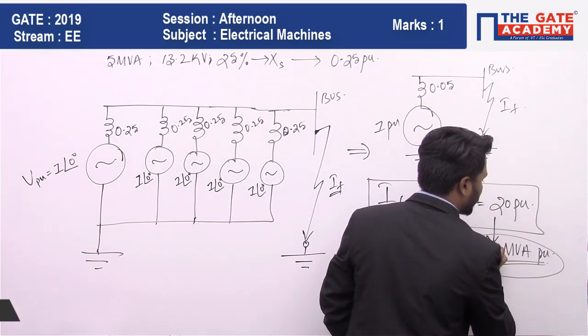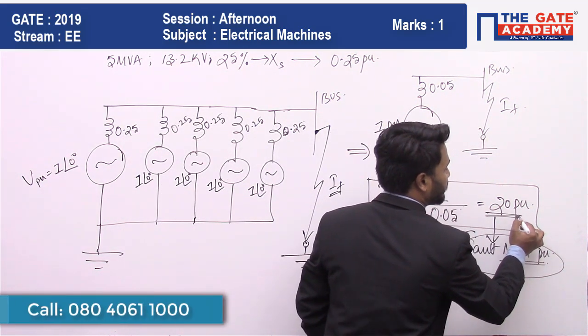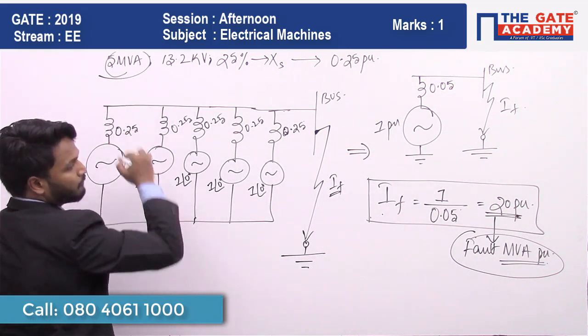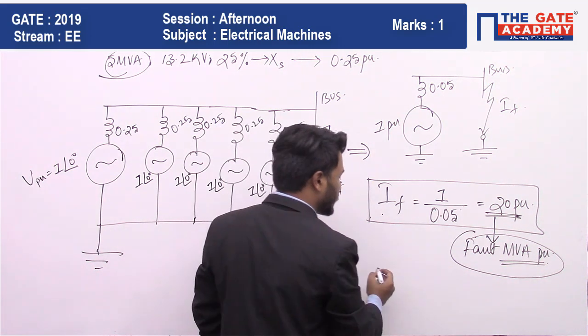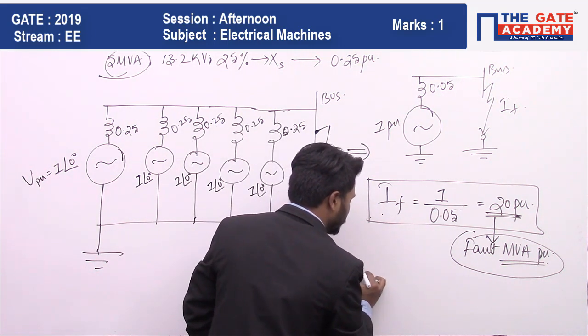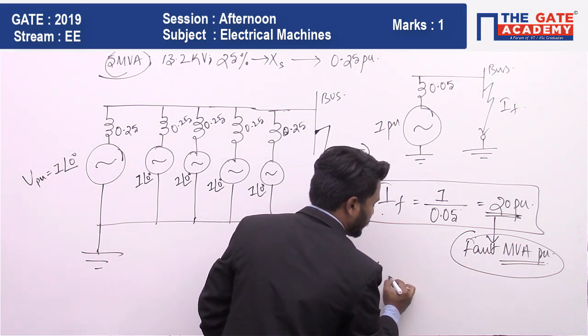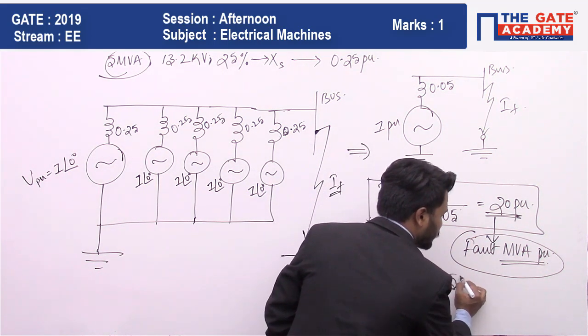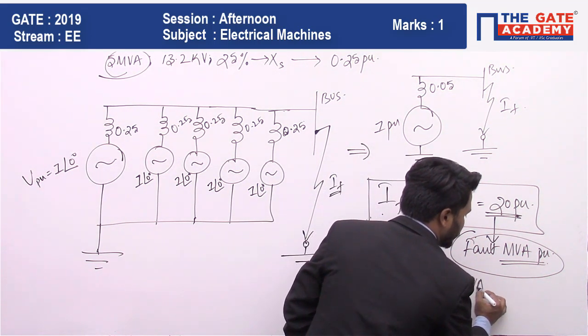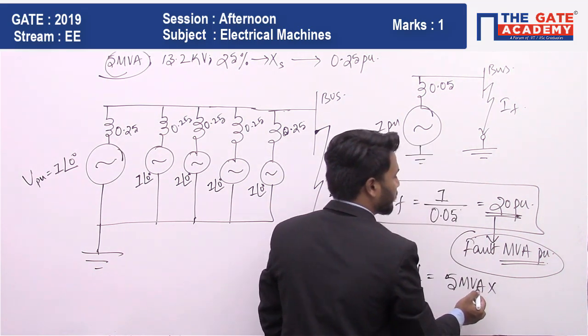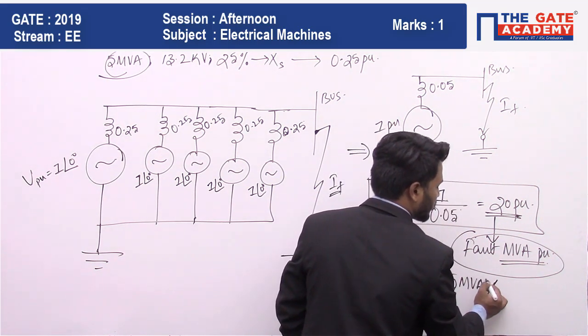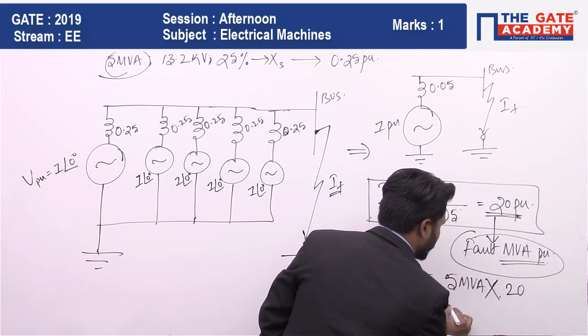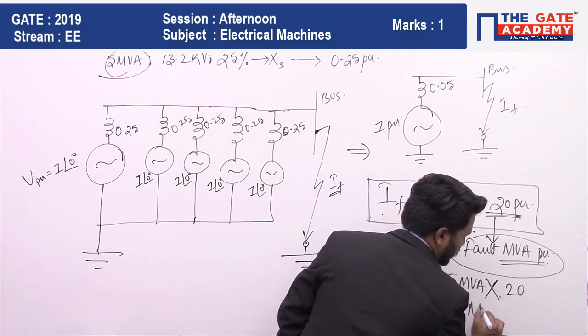Fault MVA per unit—per unit value multiplied by the base value. What is the base value? Base value is 5 MVA. Total fault level in MVA: fault level is equal to base value 5 MVA multiplied by 20, which is going to give 100 MVA.